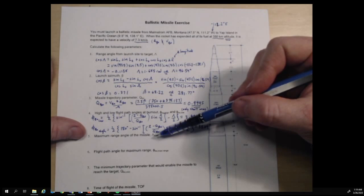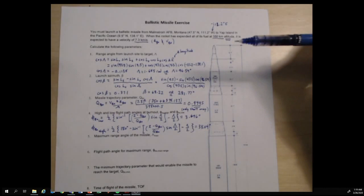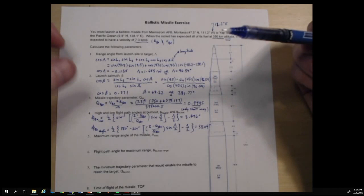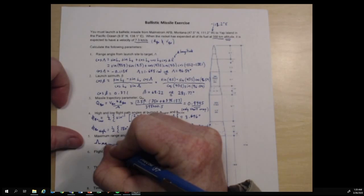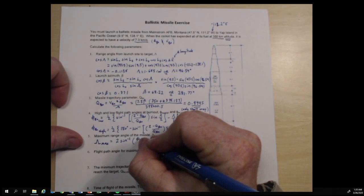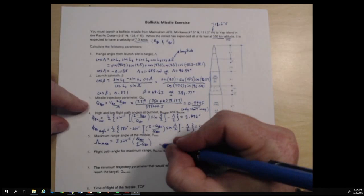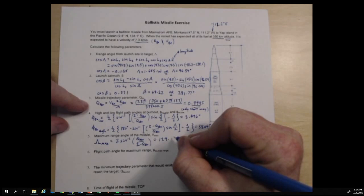Part 5: maximum range angle. From the equation sheet: λ_max = 2 · arcsin(QBO / (2 − QBO)). With QBO = 0.9495, λ_max = 129.32 degrees — the farthest target this rocket can reach.